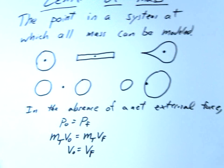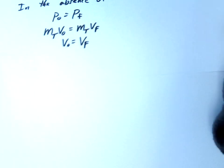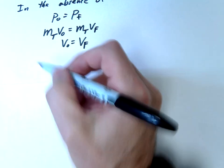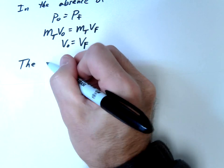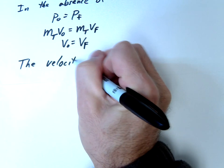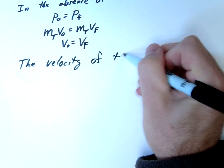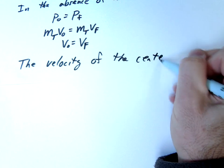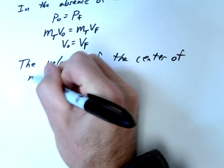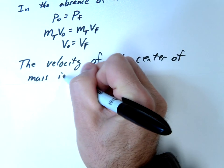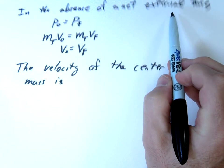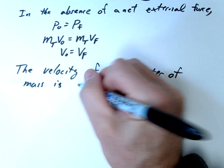So the conclusion we can draw from this is that the velocity of the center of mass of a system is constant. And again, this is in the absence of a net external force. The velocity of the center of mass is constant.